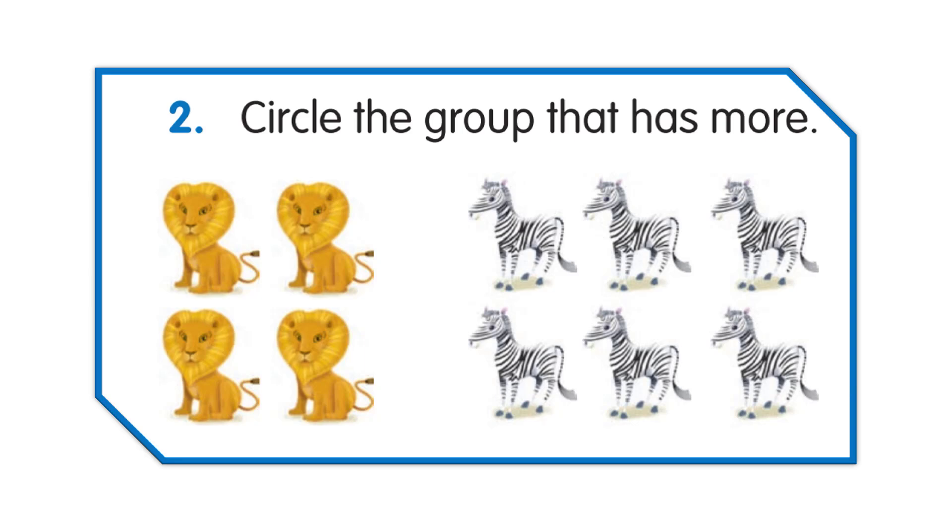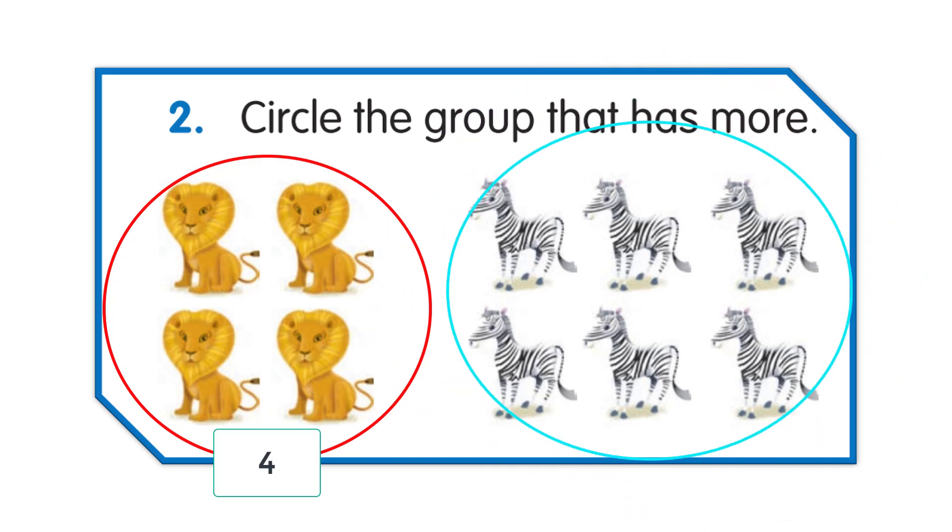But how? You have to count the number of objects in the first group. First group has 4 lions. Now we will count the number of objects in the second group.